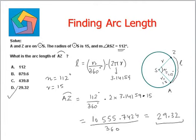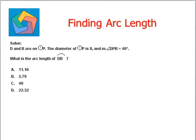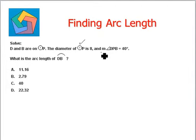Moving on to the next question. D and B are on the circle with center P. The diameter of the circle with center P is 8, and the measure of angle DPB equals 40 degrees.